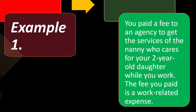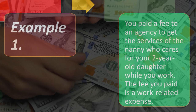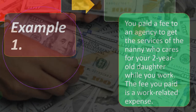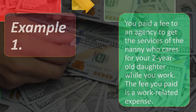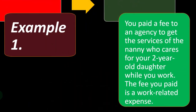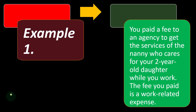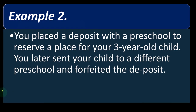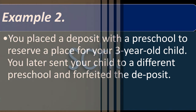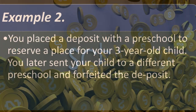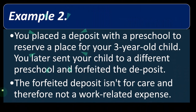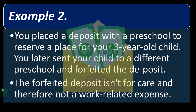Example one: you paid a fee to an agency to get the services of a nanny who cares for your two-year-old daughter while you work. That fee is a work-related expense because you paid it to obtain the care, even though it wasn't paid directly to the nanny. Example two: you placed a deposit with a preschool to reserve a place for your three-year-old child, but later sent your child to a different preschool and forfeited the deposit. The forfeited deposit isn't for care and therefore isn't a work-related expense.